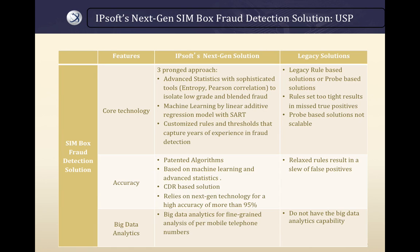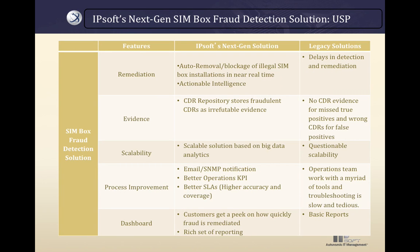Existing solutions are legacy — they rely heavily on rules and thresholds that have to be manually maintained. Rules set too tight miss true positives; rules set too relaxed result in false positives. IPSoft's solution relies on its next-gen technology for high accuracy of more than 95%. With more than 95% accuracy and over 90% coverage, our customers have confidence to leverage our advanced autonomics engine to automatically block numbers originating from fraudulent SIMboxes, with no human intervention. This automated process gives you a very healthy ROI.